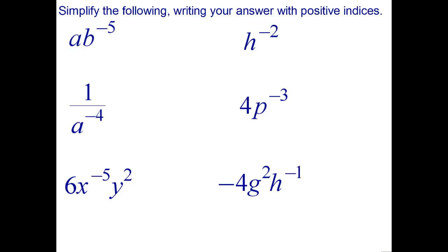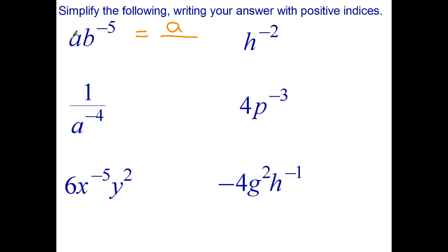Let's go ahead and simplify these. I'm going to do the three on the left and then I want you to try the three on the right. So ab to the negative 5 — I want to rewrite this without negative indices. Well, the a stays on top because it doesn't have a negative power. The b to the negative 5 goes to the denominator and gets changed to b to the positive 5.